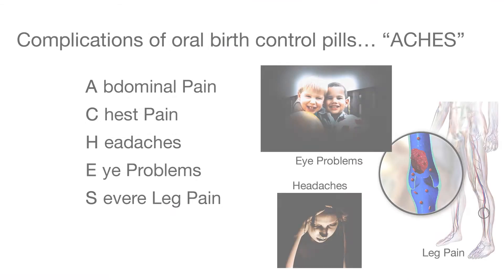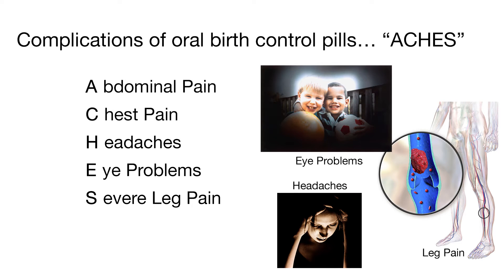Many women experience side effects from oral birth control pills, such as irregular periods, nausea, or weight change. However, if any of these more serious side effects occur, emergency care is recommended as they may signify a serious condition. Remember ACHES for the complications of oral birth control pills: abdominal pain, chest pain or shortness of breath, headaches that are sudden, severe, and persistent, possibly caused by a CVA or increase in blood pressure.